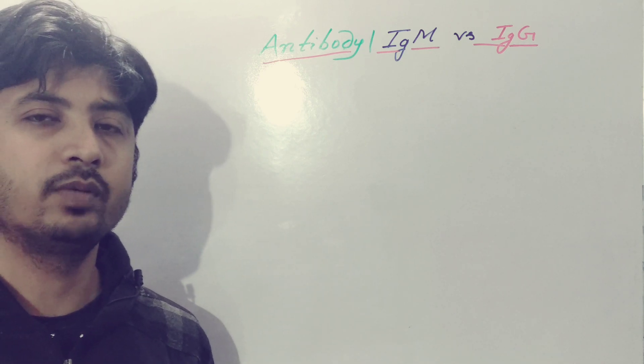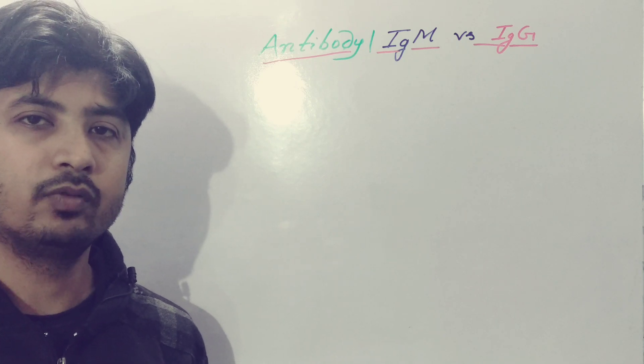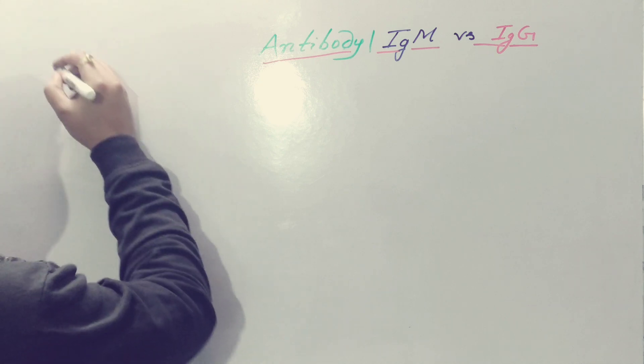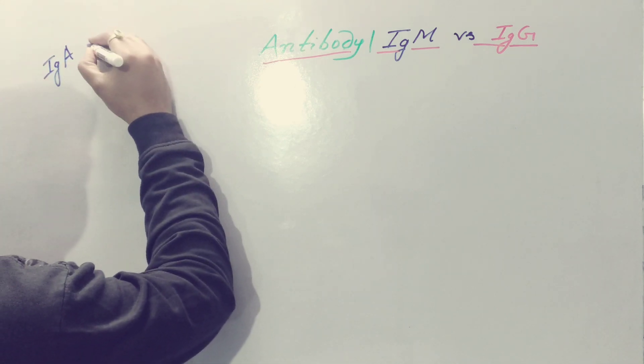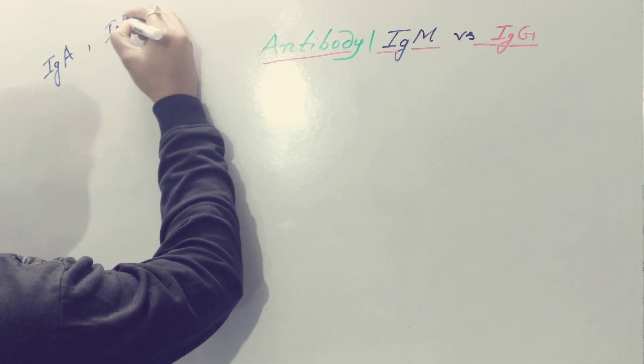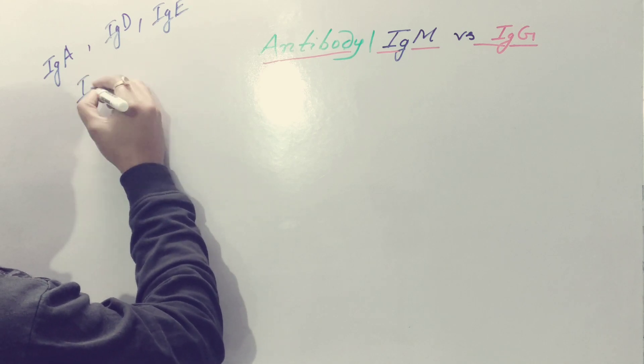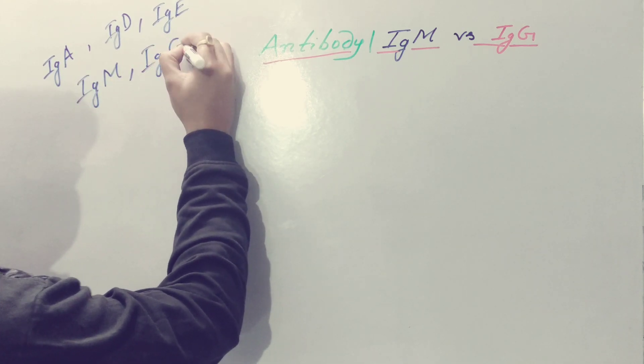This is a very important component of the immune system which neutralizes pathogens. We have five antibodies in our body: IgA, IgD, IgE, IgM, and IgG.